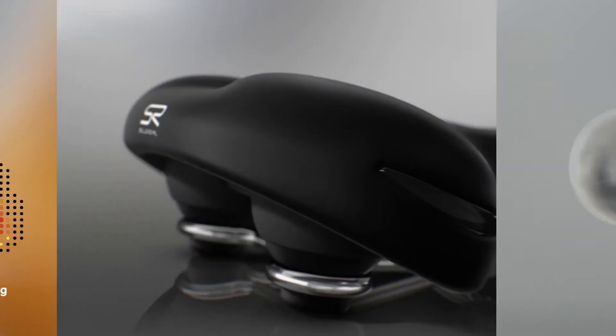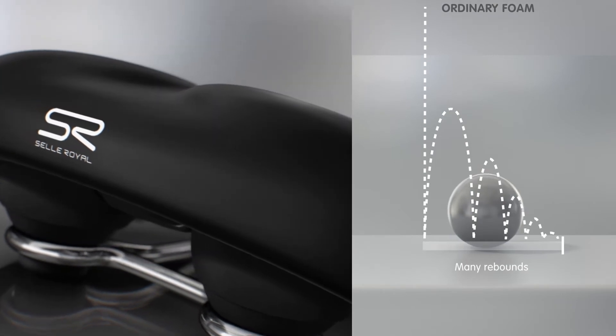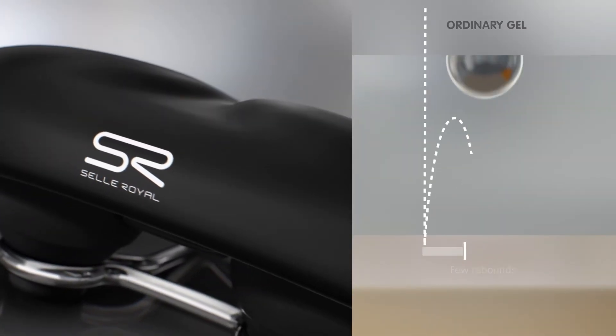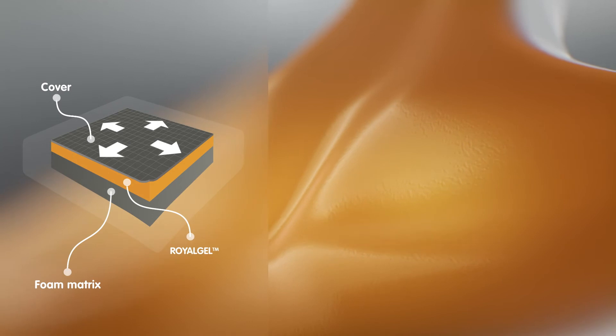Imagine a steel ball hitting a surface. Ordinary standard gels are silicon based and they don't provide soft solid three-dimensional displacement. Royal Gel, however, moves in every direction like water, whilst keeping the shape memory as a solid body.